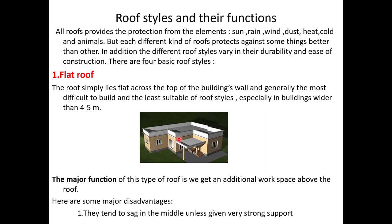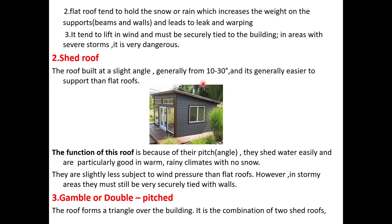There are additional topics on roof styles. Selection criteria include the climate and region type of the building. Different roof styles include the flat roof, which is very common for a single-storey building — the topmost portion is flat with a parapet for safety. The flat roof simply lies flat across the top of the building's walls and is generally the most difficult to build.